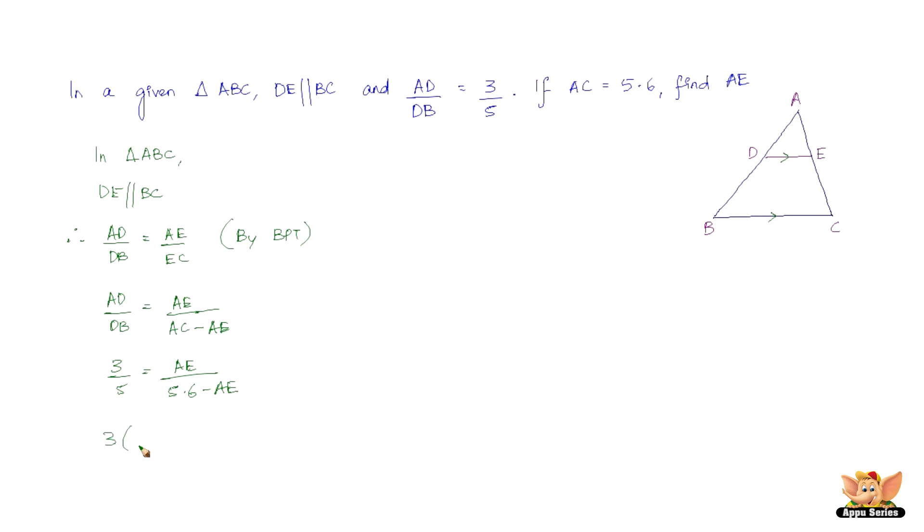So let's cross multiply. Then we've got 3 times (5.6 - AE) = 5 times AE. So now we've got 3 times 5.6, nothing but 16.8, 16.8 - 3 times AE equals 5AE. So, 16.8 = 5AE + 3AE, because the negative AE goes to the right hand side. So we've got 16.8 = 5 plus 3AE, nothing but 8AE.